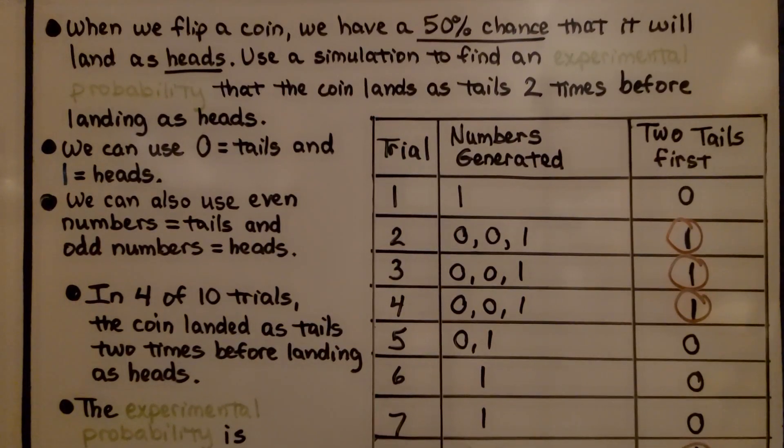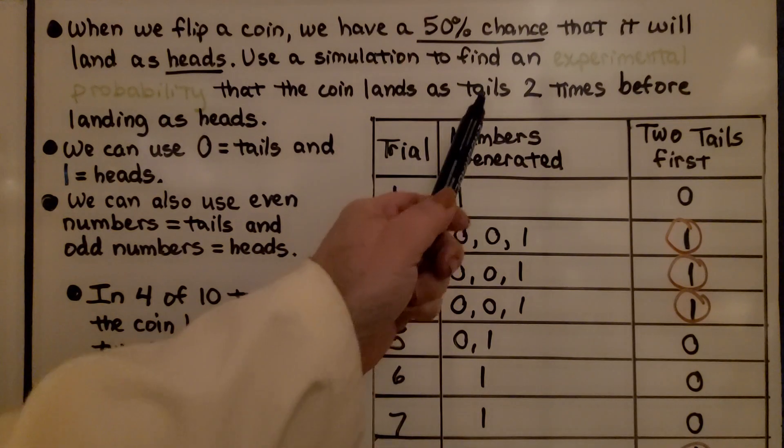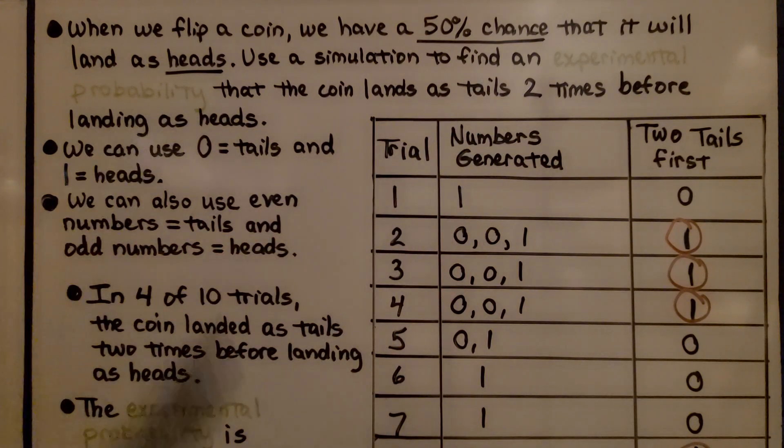When we flip a coin, we have a 50% chance that it will land as heads. Use a simulation to find an experimental probability that the coin lands as tails 2 times before landing as heads. So that's our experiment. We want to see if it will land tails 2 times before landing as heads.